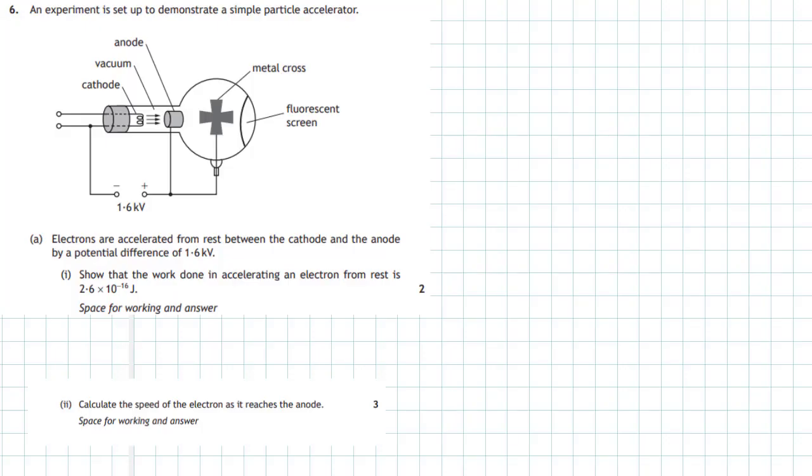Question 6 from section 2 of the 2018 Higher Physics examination. An experiment is set up to demonstrate a simple particle accelerator. Electrons are accelerated from rest between the cathode and the anode by a potential difference of 1.6kV. Show that the work done in accelerating an electron from rest is 2.6 times 10 to minus 16 joules.